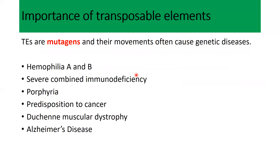Transposable elements are also called mutagens because they can affect the sequence of a gene and produce mutations. They can cause genetic diseases including hemophilia and severe combined immunodeficiency (SCID), as well as others including Alzheimer's disease.